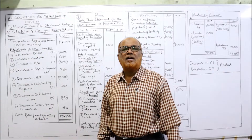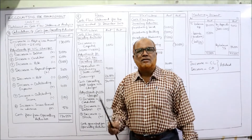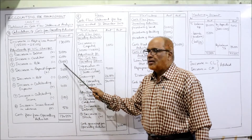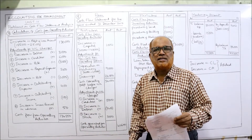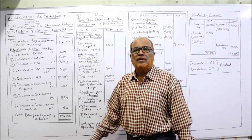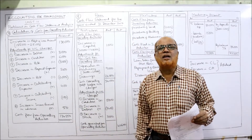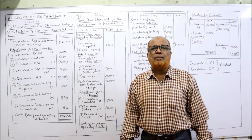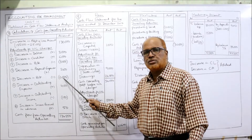Next, bills receivable — it is a current asset. Last year 12,000, current year 15,000 — increase in current asset, so deduct. Increase in bills receivable: minus 3,000 (in bracket, we deduct). Then prepaid expenses — it's a current asset. Last year 1,600, current year 1,400 — decrease in current asset, so add. Decrease in prepaid expenses: add 200. Next, bills payable — it's a current liability. Last year 18,000, current year 16,000 — decrease in current liability, so deduct. Decrease in bills payable: minus 2,000.